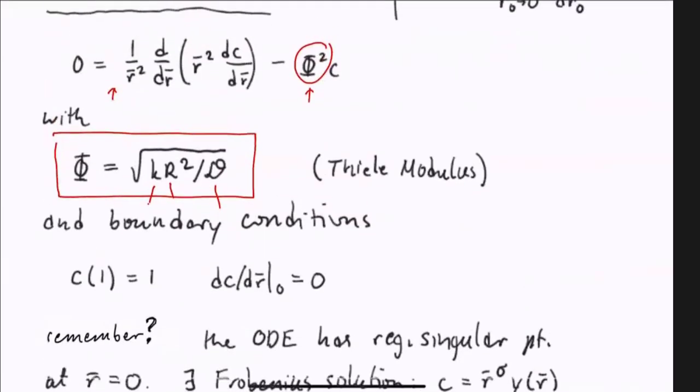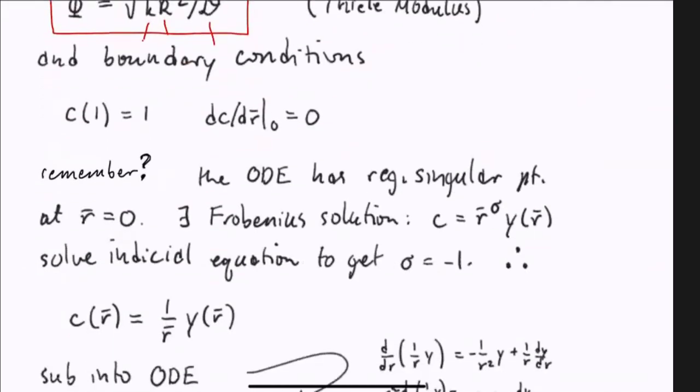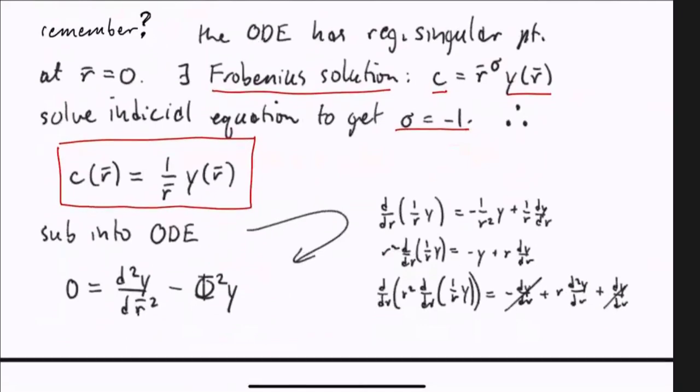If we look back at our ODE, we have a singular point at R equals zero. We have to use the Frobenius method. This may be something you learned in differential equations in undergrad. If not, don't worry. The point is there is a systematic way of getting solutions called Frobenius series. In this case, it gives you that you should be able to obtain a solution from the substitution C related to a new function Y through C equals 1 over R times Y.